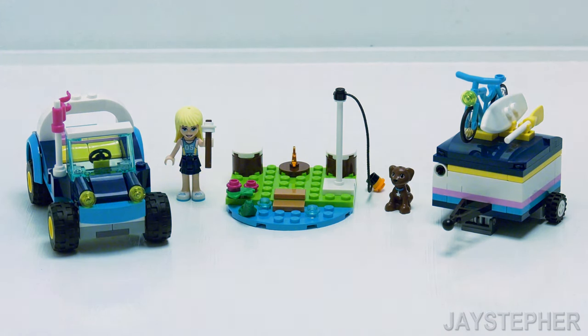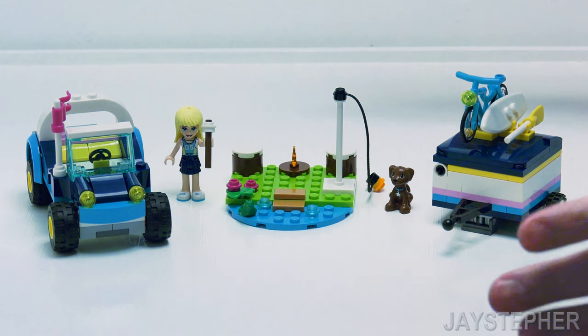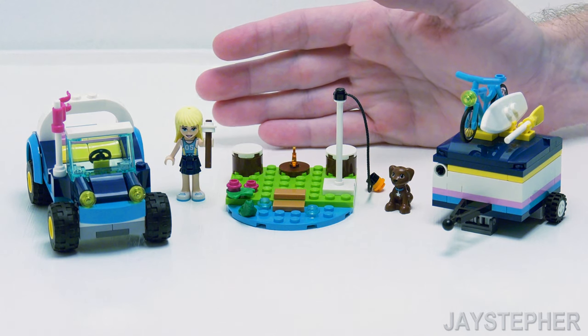Let's explore Stephanie's Buggy and Trailer by Lego Friends. Set number 41364 contains 166 pieces. It's not a bad set, but let's point out its strengths and weaknesses.